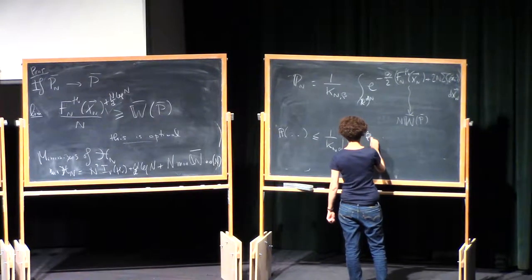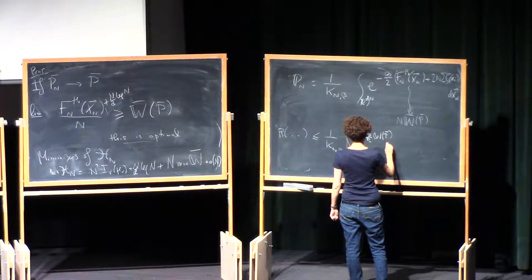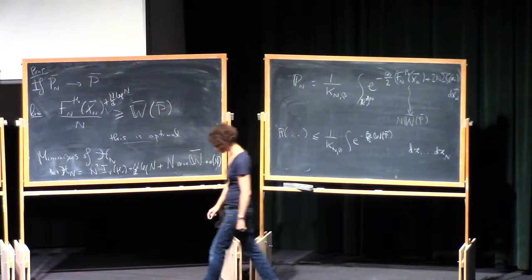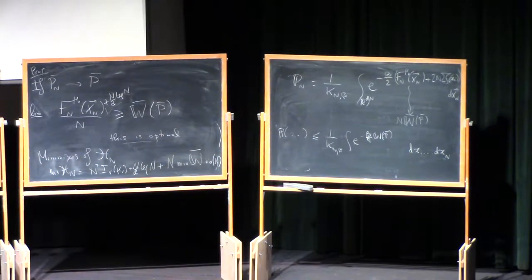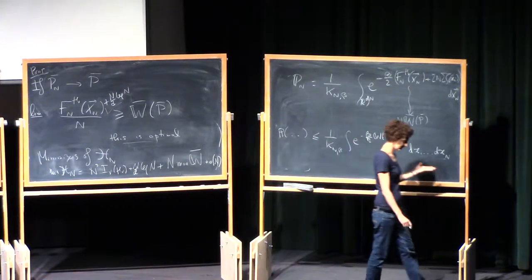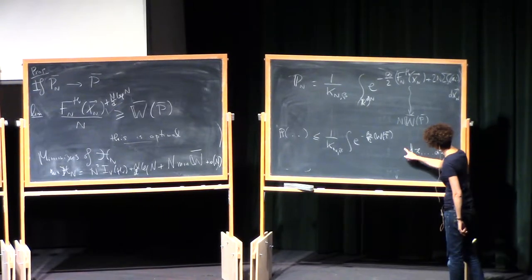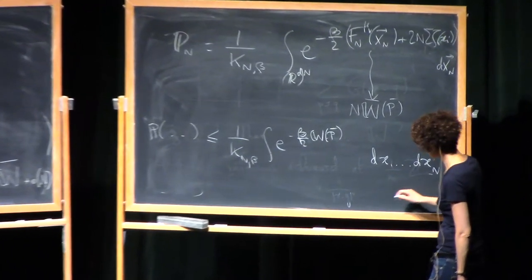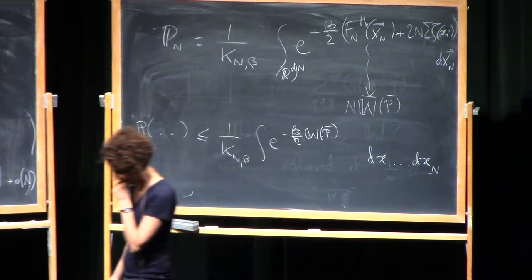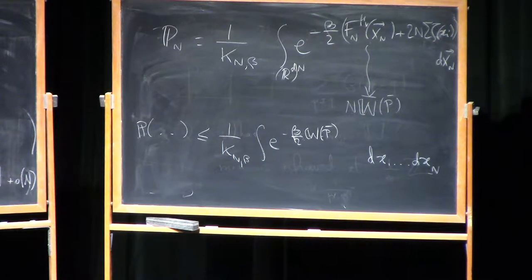So that's the first bound. But now I have to deal with dx_1 ... dx_n. What is the connection between x_1, ..., x_n and the limiting empirical field P_bar? It's not so obvious. What you have to do is look at the configurations x_1, ..., x_n whose limiting empirical field will look like P_bar — otherwise why am I allowed to replace by P_bar? And you have to compute the logarithm of the volume of these configurations.